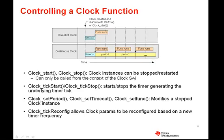For a one-shot clock, only the timeout value is defined, and the period will simply be set to zero. Keep in mind that the functions called by each of the clock instances are being invoked in the context of the clock's software interrupt. This means that any calls to Clock_start and Clock_stop must be called from that same context and not from any other independent threads that happen to be executing. Other API calls include Clock_tickStart and Clock_tickStop to allow control of the underlying timer driving the clock module, and Clock_setPeriod, Clock_setTimeout, Clock_setFunc to modify a clock instance's parameters. There is also an API called Clock_tickReconfig, which allows the clock parameters to be reconfigured if the CPU frequency changes because of any frequency scaling.